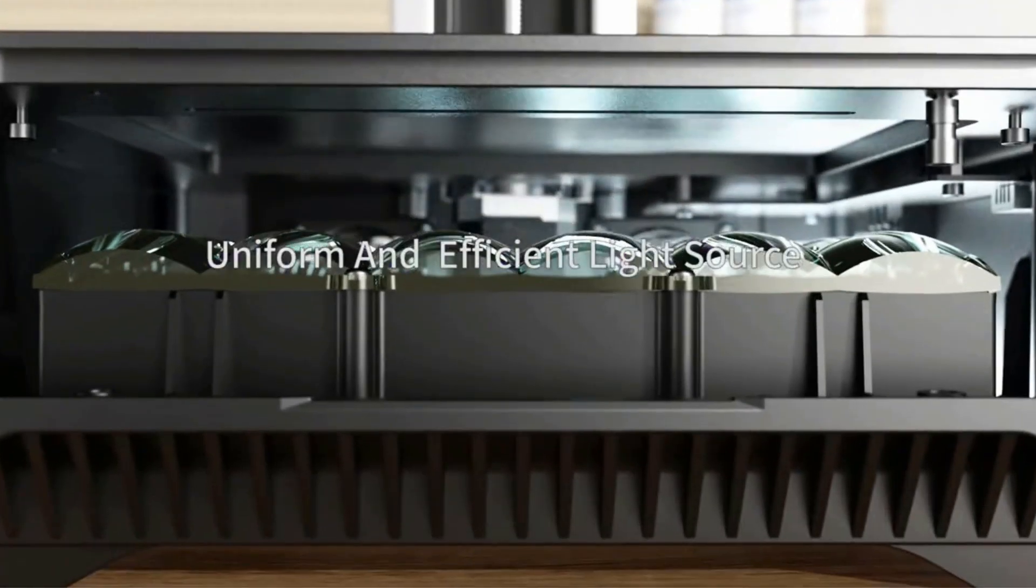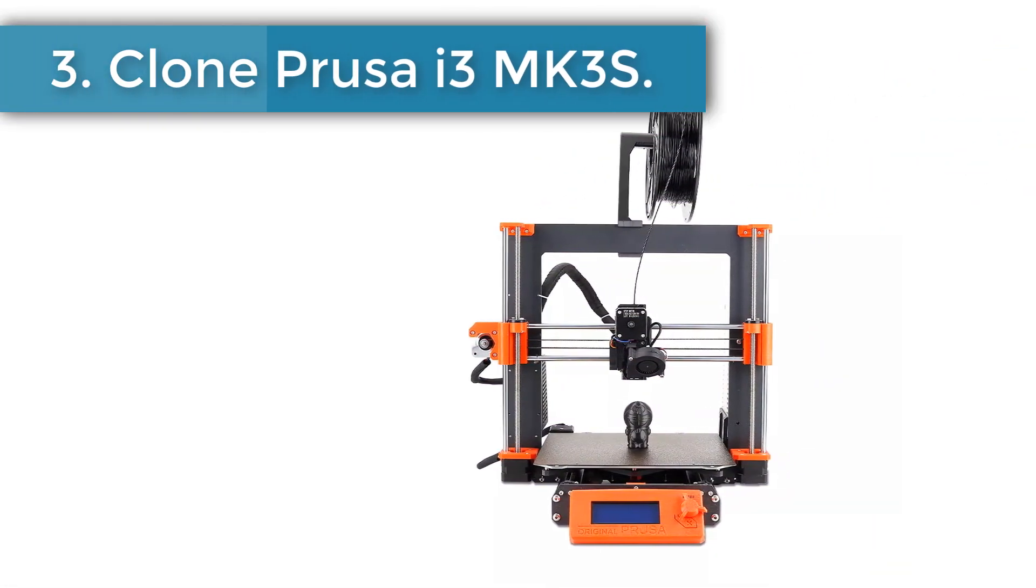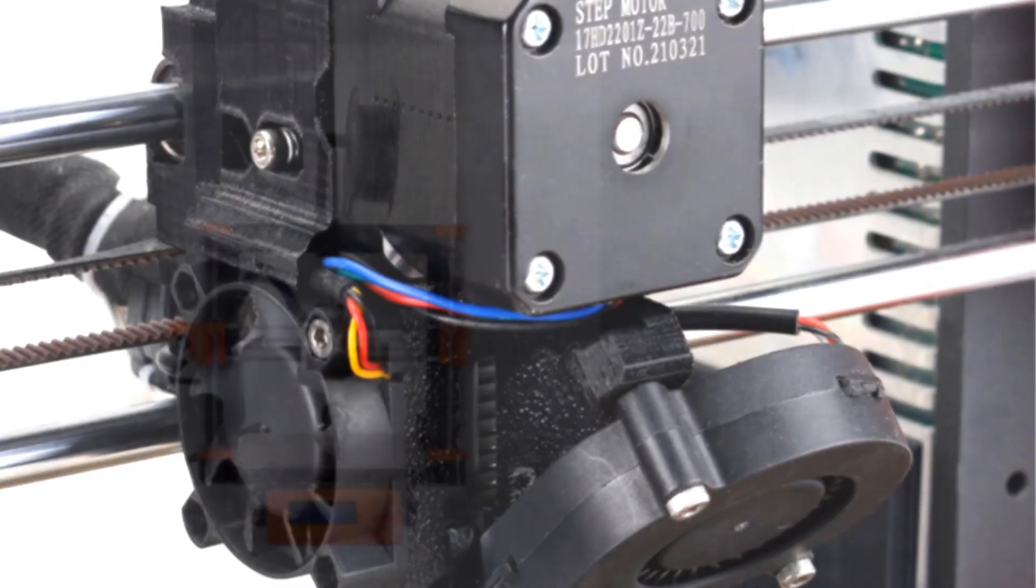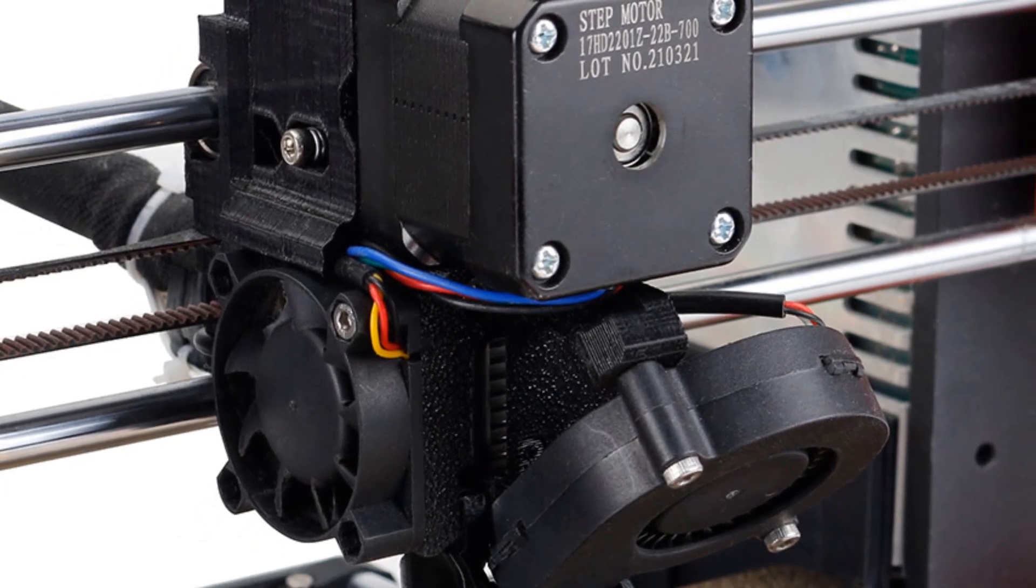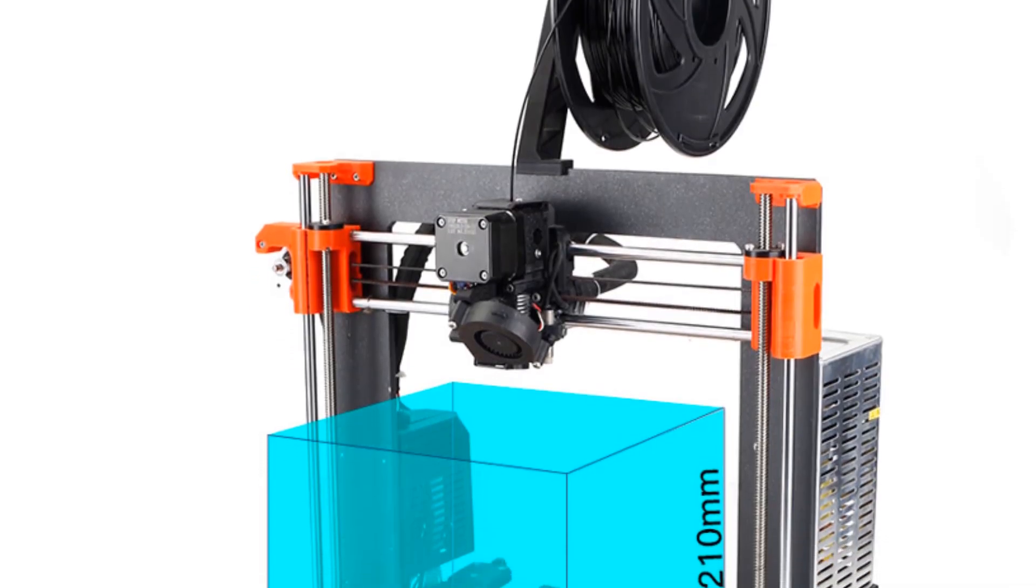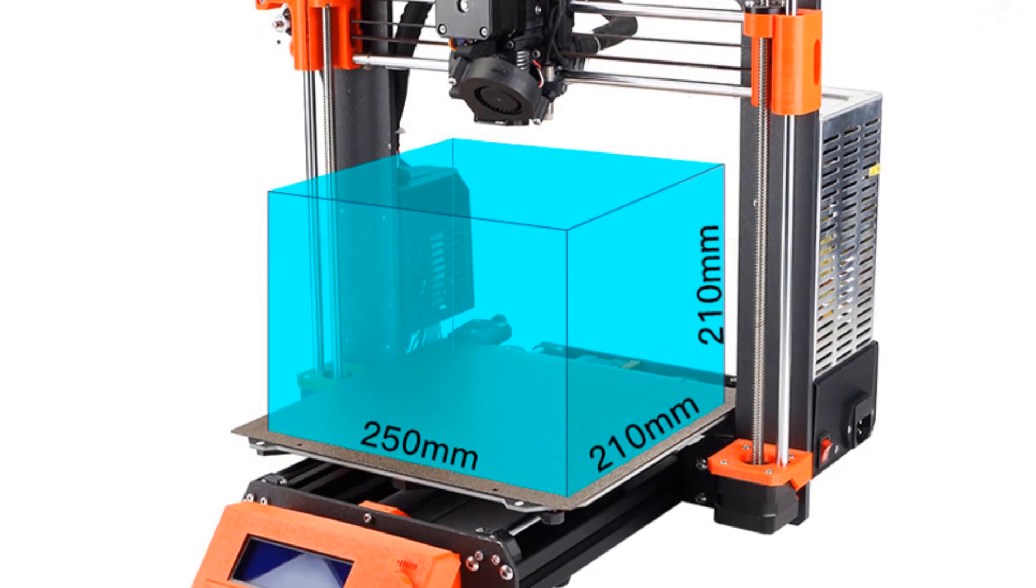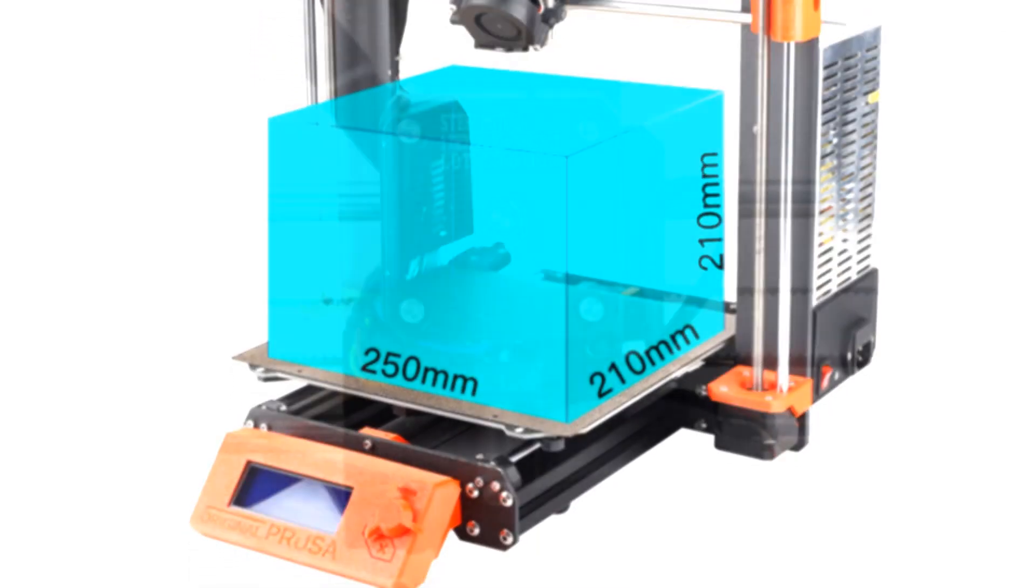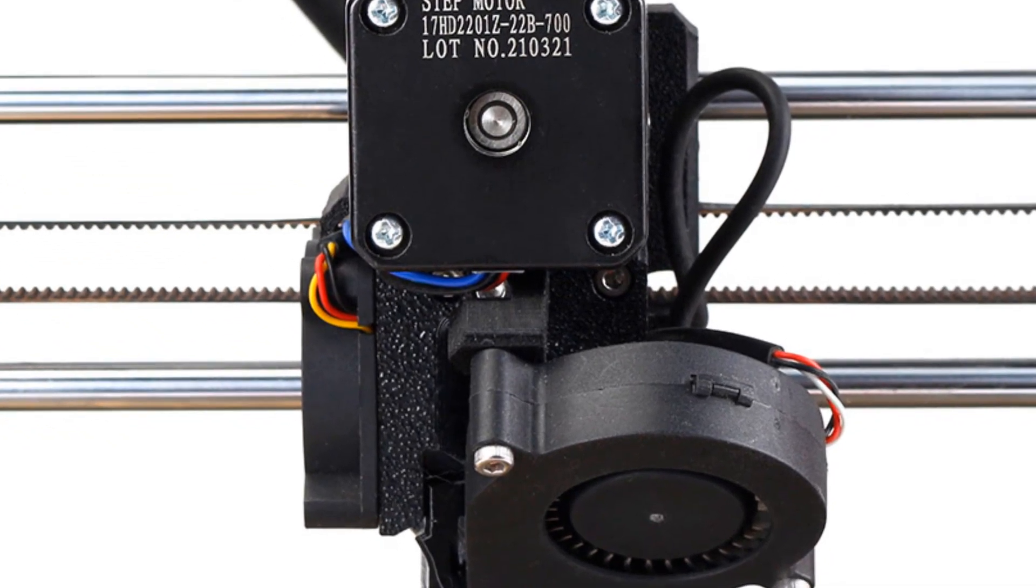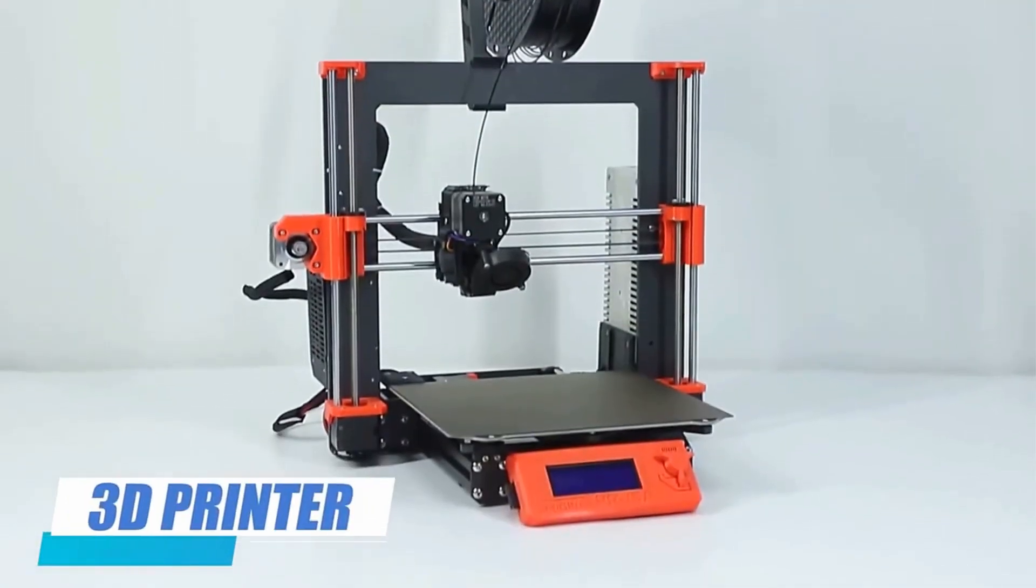Number three: Clone Prusa i3 MK3S. The Clone Prusa i3 MK3S printer has exceptional print quality, more reliability and decent pricing on AliExpress. It is an original 3D printer made by well-known company Prusa. It has easy installation and is designed to print elements with dimensions of 250 by 210 by 210 millimeters. Prusa i3 MK3S has an upgraded extruder and a new filament sensor.